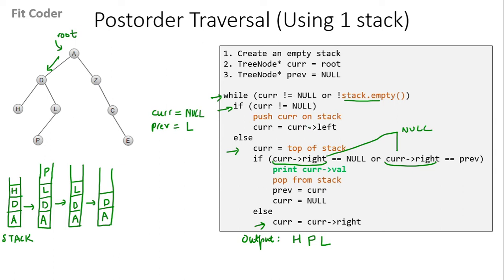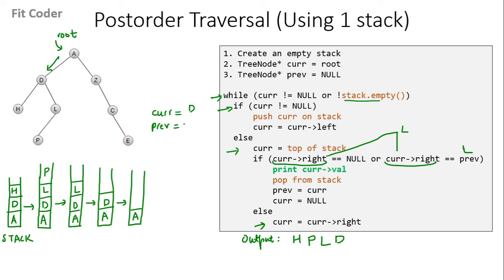In the next iteration, `current` is null but the stack is not empty, so we come in the else part. `Current` is now top of stack, which is D. Right of D is L, and `previous` is also L, so this if condition is true. We print the value of `current`, which is D. We pop from the stack. We set `previous` equal to `current`, and we set `current` equal to null.